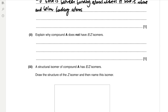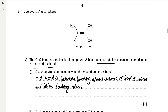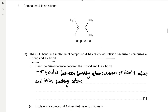Explain why compound A does not have EZ isomers. Looking at compound A, one of the carbons of the double bond has two identical CH₃ groups attached. Because both groups on that carbon are the same, either arrangement will not produce a different stereoisomer, so EZ isomers cannot exist.